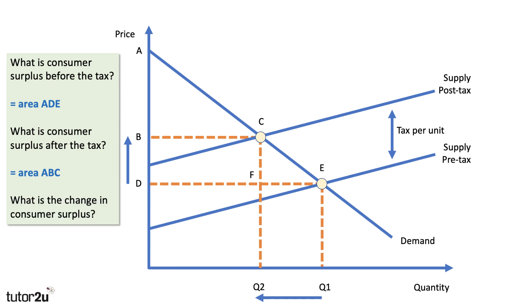Next question: what's the change in consumer surplus, contrasting the pre and post-tax situation? The change is the trapezium B, D, E, C — that area has been lost. Big point here: if you've got an essay or assignment question on taxation, your analysis marks will be stronger if you bring in the concept of consumer surplus. The tax has reduced consumer surplus by area B, C, E, D because the tax has increased the price and quantity consumed has contracted from Q1 to Q2.